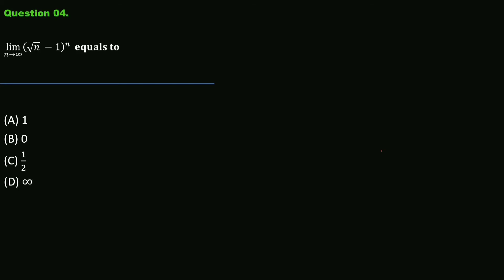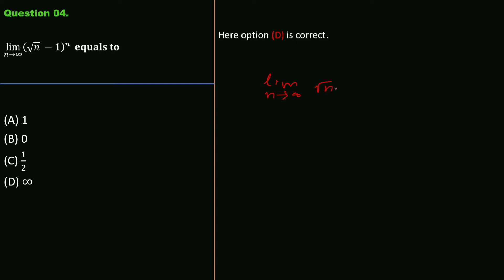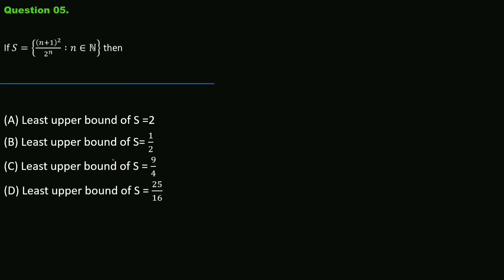Question number 4: find lim(n→∞) (√n − 1)^n. Option D is correct. There is nothing complex to solve here — directly substituting infinity gives ∞^∞, which goes directly to infinity. So option D is correct.